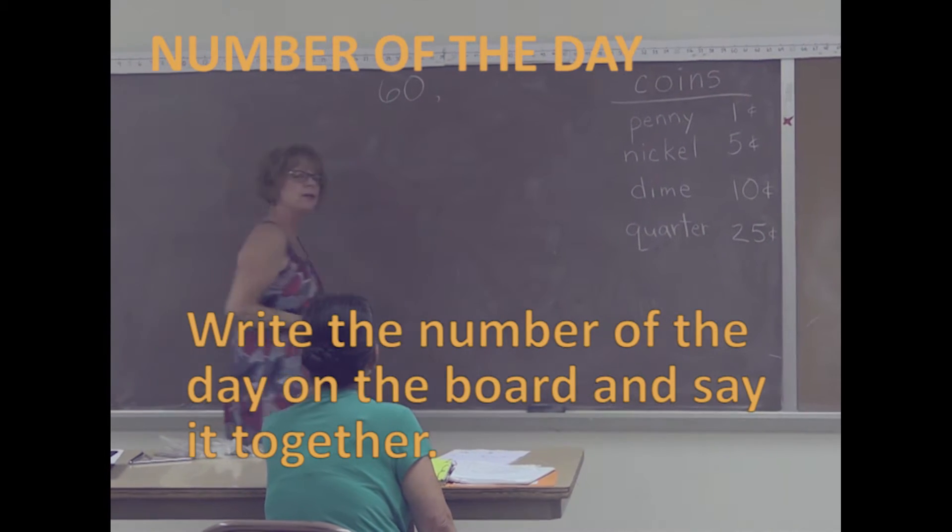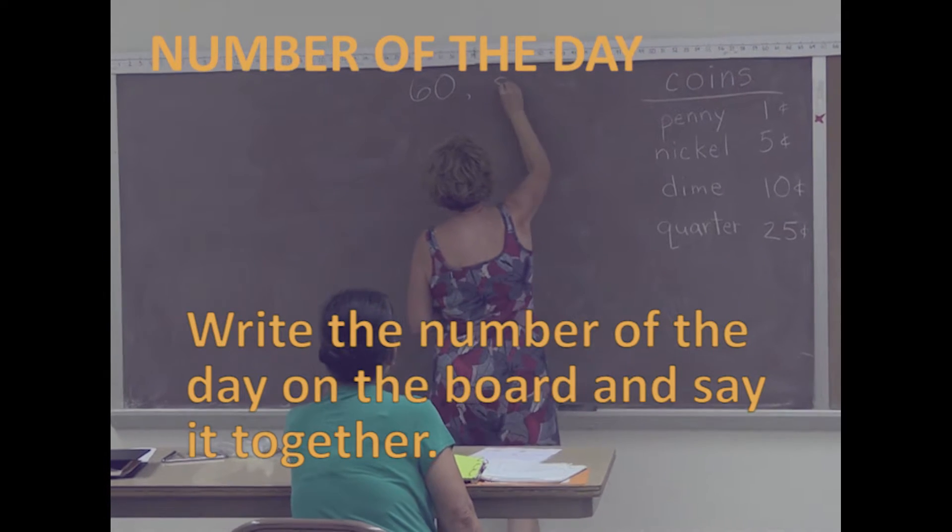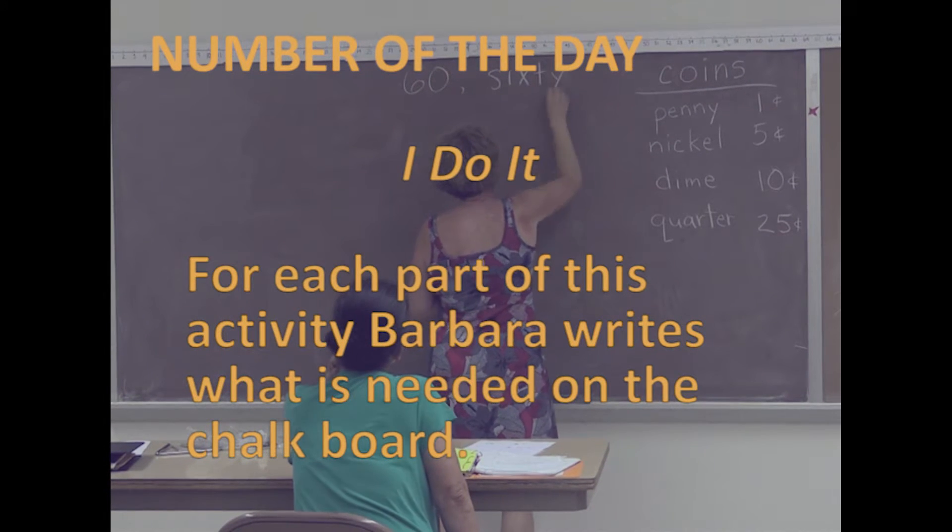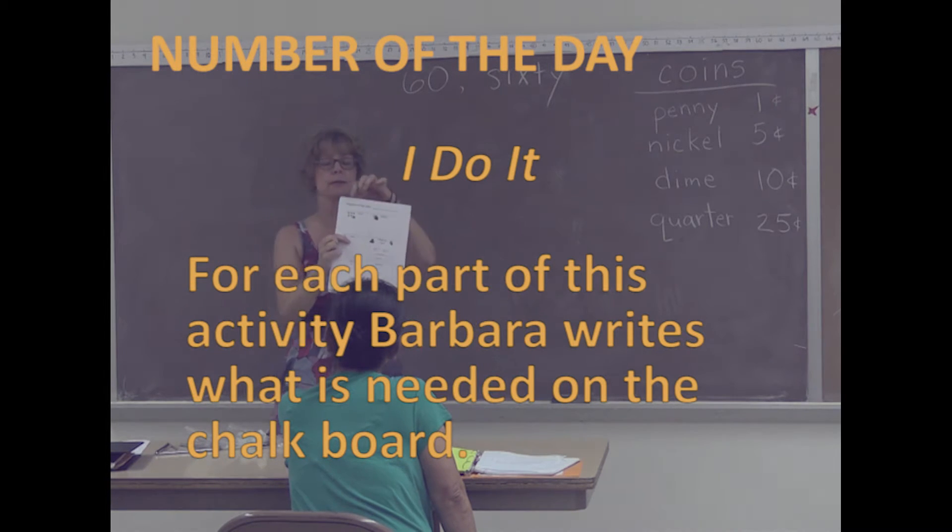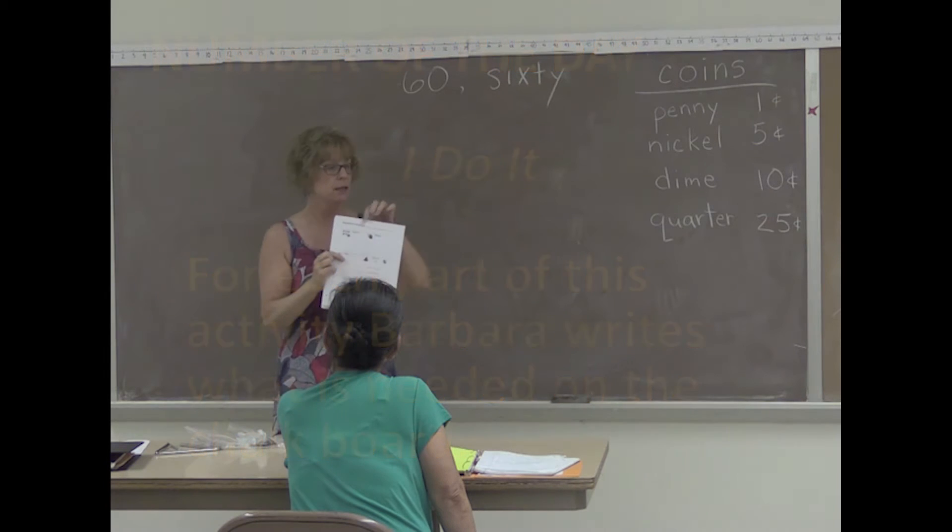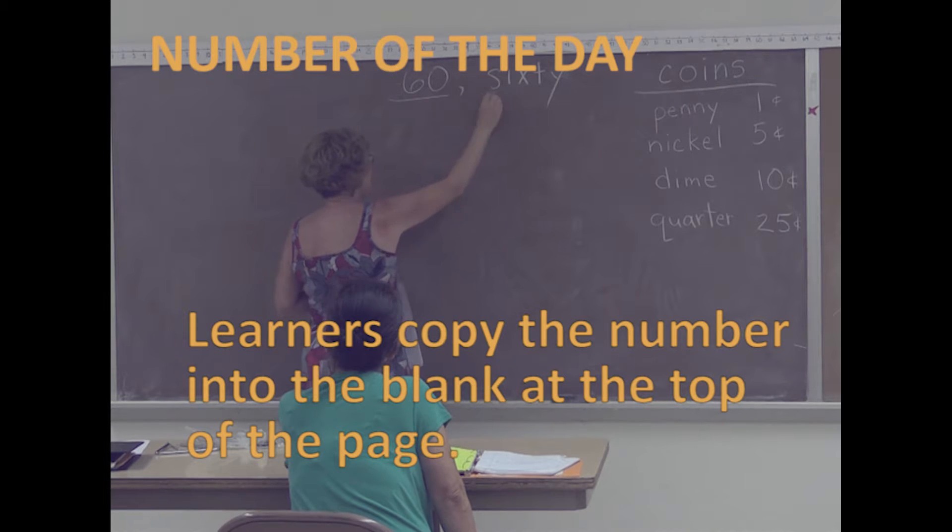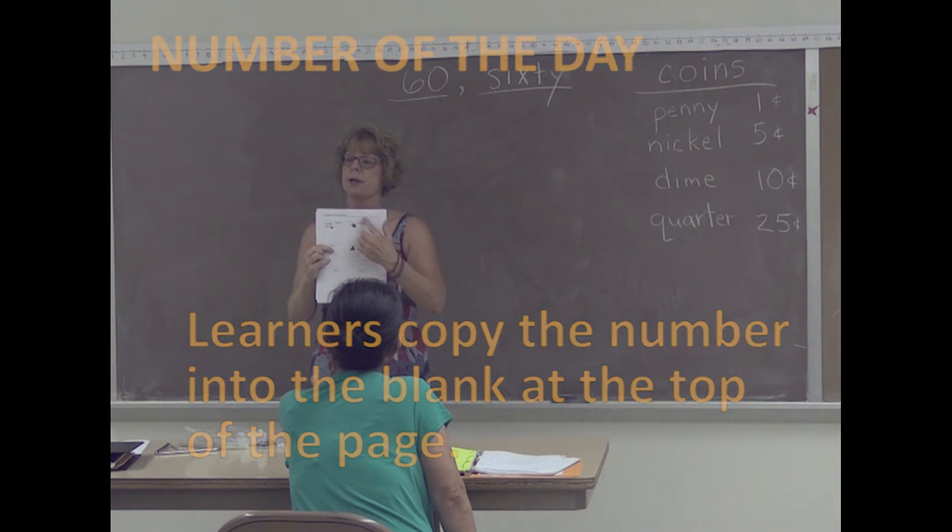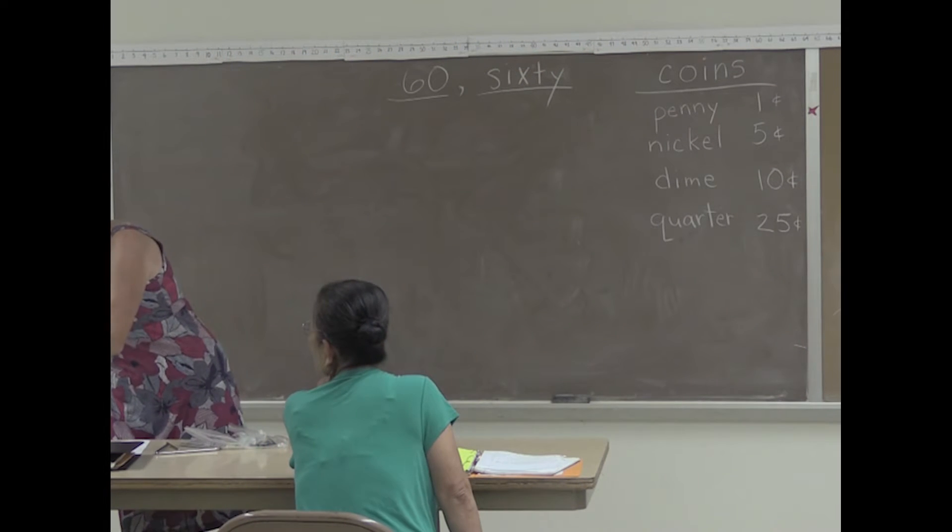How do you write number 60? How do you spell 60? On your paper, you will put the number of the day, 60. On the first line, after the comma, you will spell the number for today on the next line. Go ahead and do that.